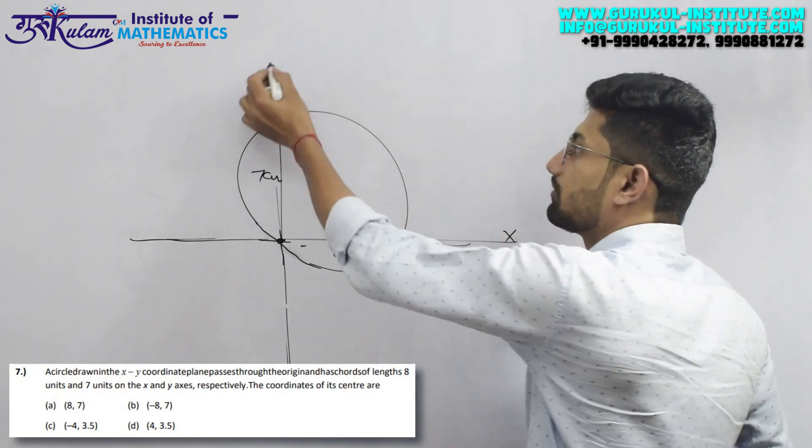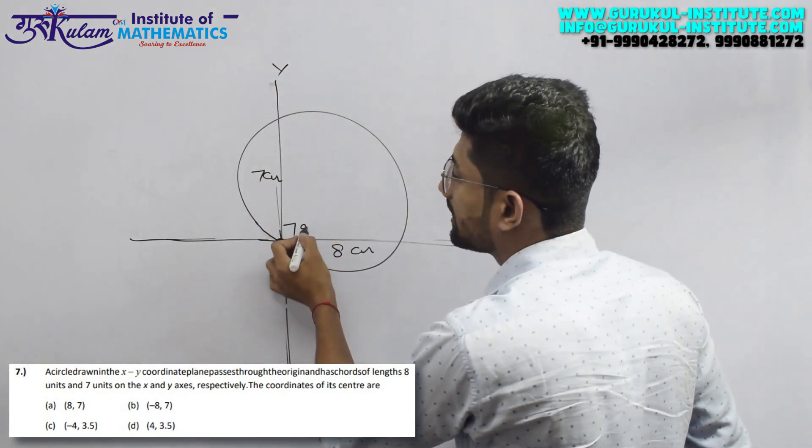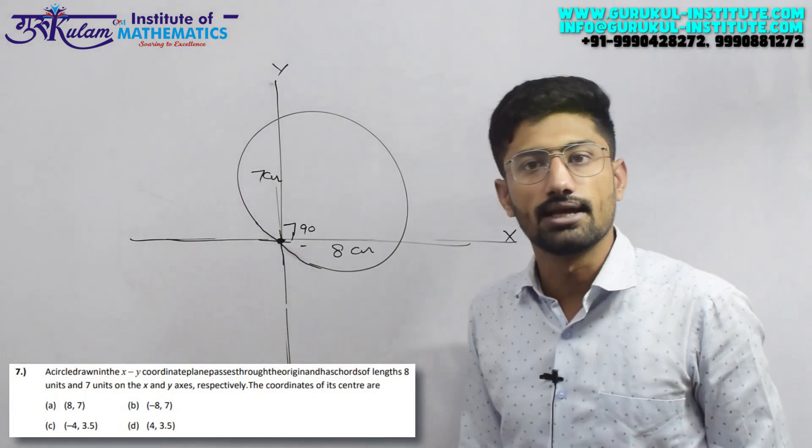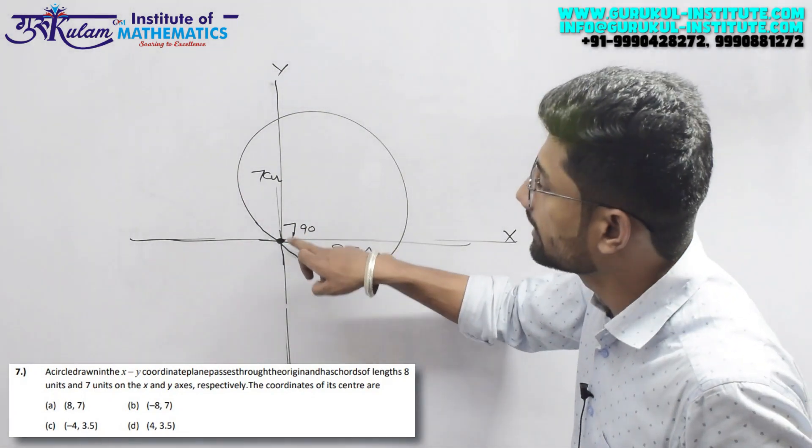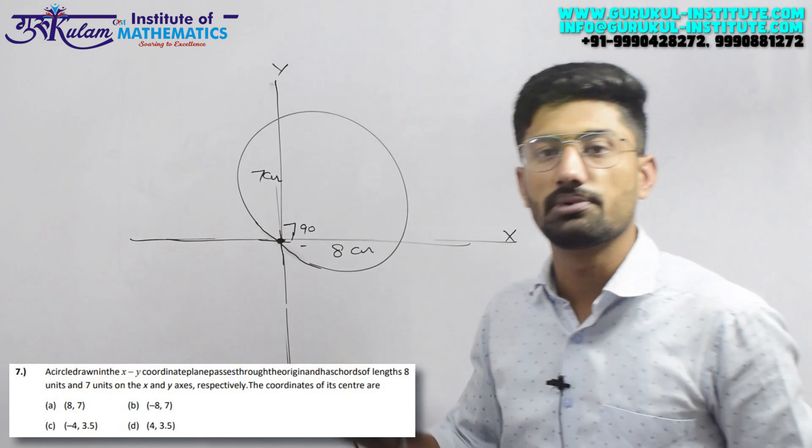So this angle will be 90 degrees. Now this 90 degree angle is formed on the circumference.